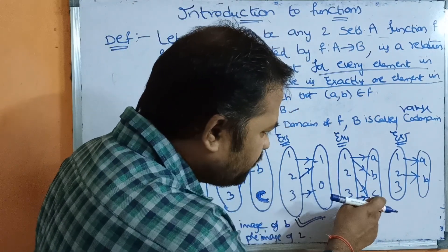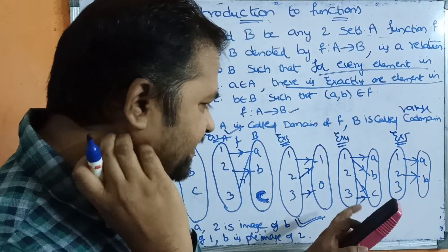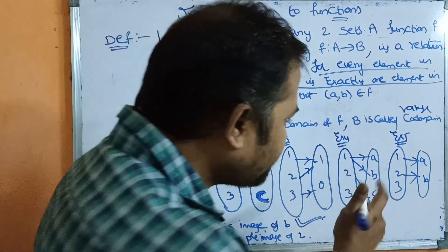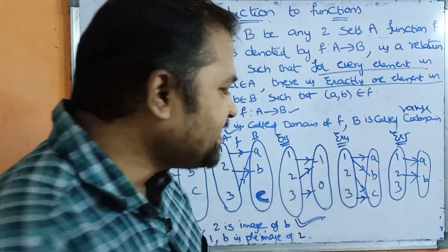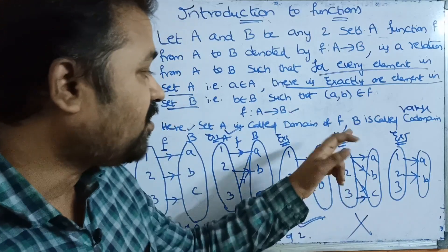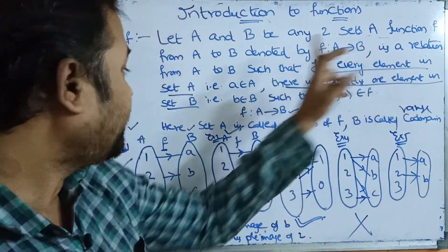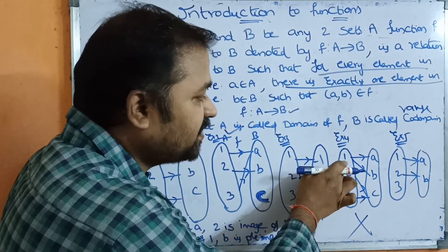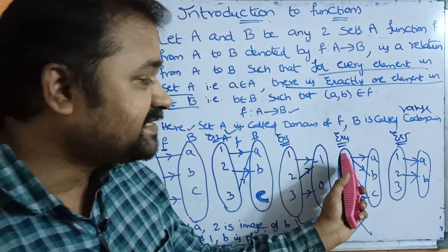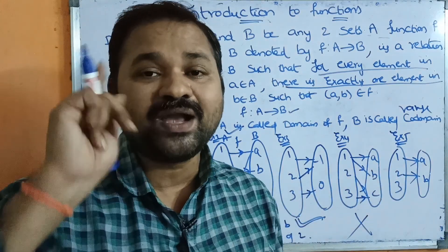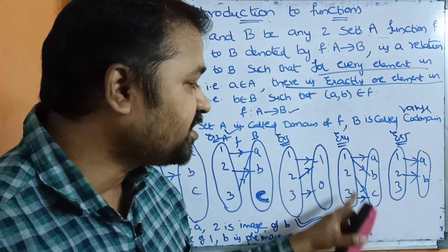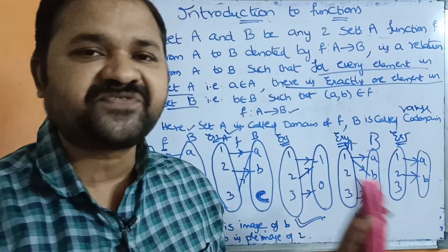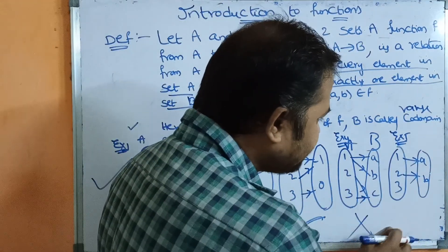In Example 4, element 1 in set A is mapped to two elements in set B — both A and B. Elements 2 and 3 each map to a single element (C), so there is no problem with them. However, since element 1 maps to two elements in set B, this violates the definition of a function. For every element in set A there must be exactly one mapping in set B, so this is NOT a function.